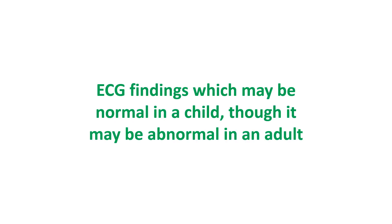The following findings may be normal in a child though abnormal for an adult: heart rate above 100 per minute, QRS axis more than 90 degrees, right precordial T wave inversion (also known as juvenile T wave inversion), dominant right precordial R waves, short PR interval, short QT interval, short P wave duration, short QRS duration, and inferior and lateral Q waves.